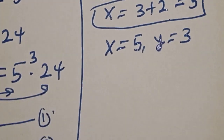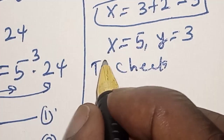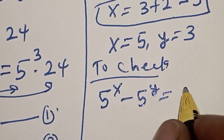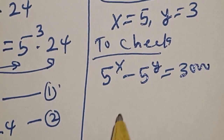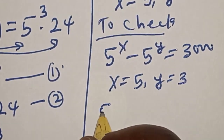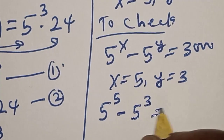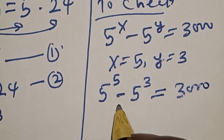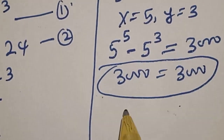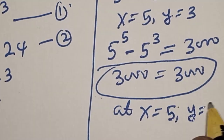Let's check to confirm if our answer is right. For the given equation, 5 raised to power x minus 5 raised to power y must equal 3000. With x equals 5 and y equals 3, we compute 5 raised to power 5 minus 5 raised to power 3. This equals 3000, meaning the left-hand side equals the right-hand side. We satisfy the given equation at x equals 5 and y equals 3.